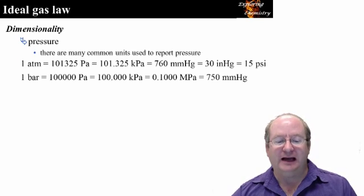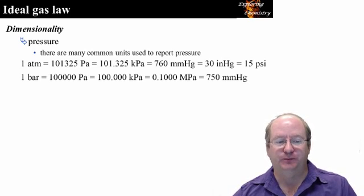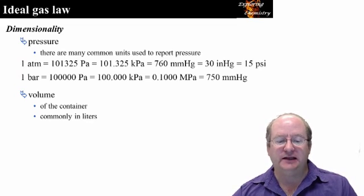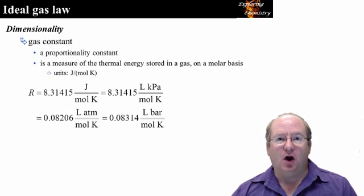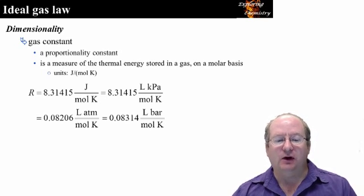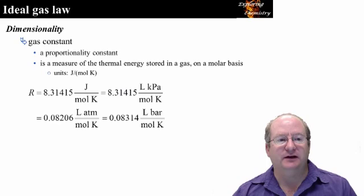IUPAC changed the standard pressure from one atmosphere to one bar in 1982. For volume, in science, volume is commonly measured in liters; in industry, units of cubic meters are also common. Amount of substance is measured in moles and temperature is measured in Kelvin. R is the gas constant, which corrects for the proportionality between the various units in the ideal gas law. There are many numerical values and associated units for R, and some common values are listed here. When using the ideal gas law, you need to select the value of R that has the appropriate units.